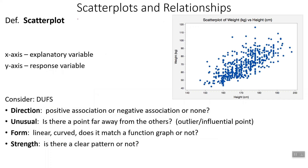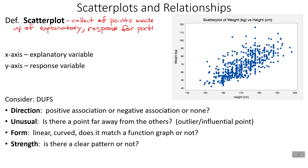A scatterplot is a collection of points made up of explanatory-response pairs for particular data values. Each point represents a particular data value — for example, one person with a height of about 150 centimeters and a weight of maybe 44 kilograms. Remember: the explanatory variable is our X value — it has the X in it for explanatory — and our response is the Y.